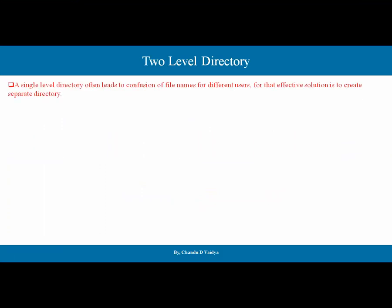If we go with the two-level directory structure, we have to discuss about the drawbacks of the single level directory structure. A single level directory structure often leads to confusion of the file names for different users. The effective solution is to create a separate directory. The single level directory problem was for naming and grouping, and the solution is to create a separate directory. Separate directory creation is not allowed in a single level directory structure, but in the two-level directory structure it is allowed.